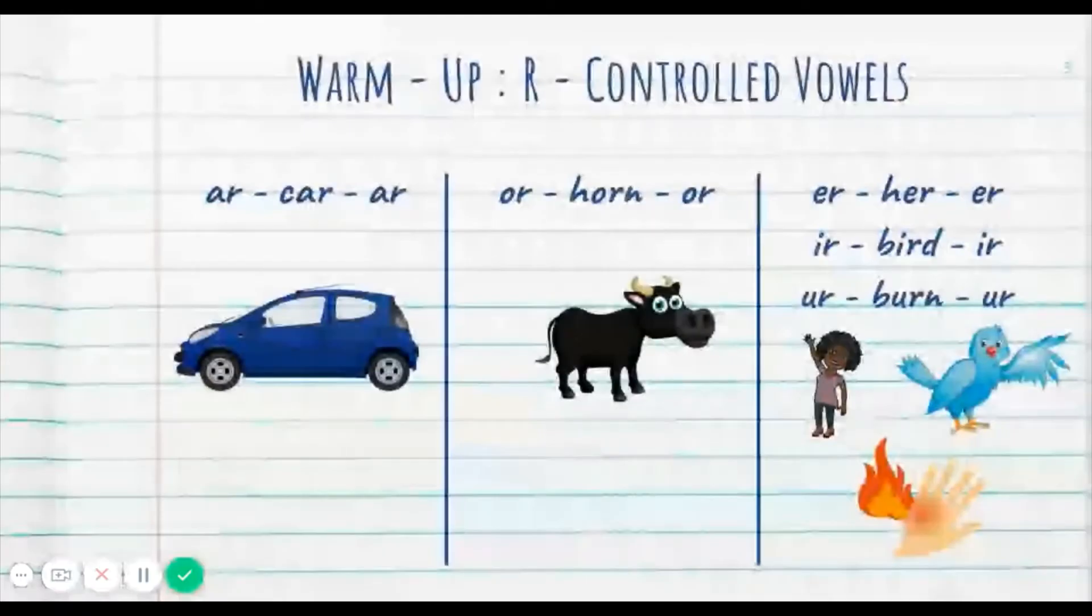All right, so before we jump into the vowel teams, I know you're excited. We're going to be starting with the warmup. So we're doing some R controlled vowels. This will just help us when we're reading different kinds of words. Because these vowels are pretty tricky. Actually, I think Bridget said she was going to try and trick you. Let's work on it. So in the first column here, we have AR, CAR, R.